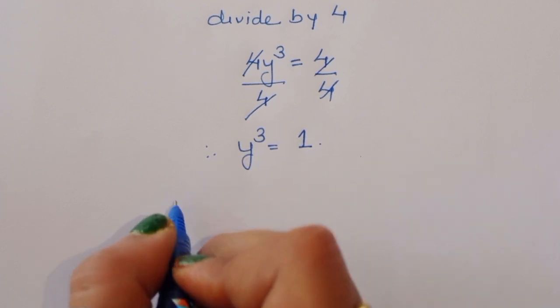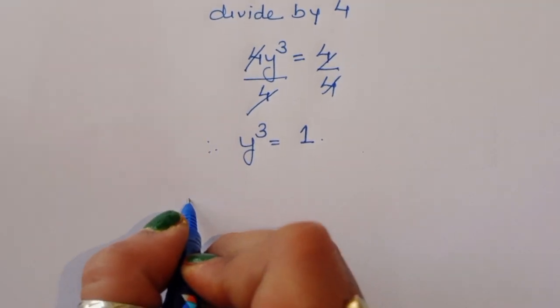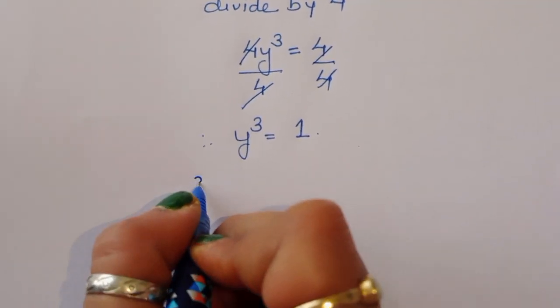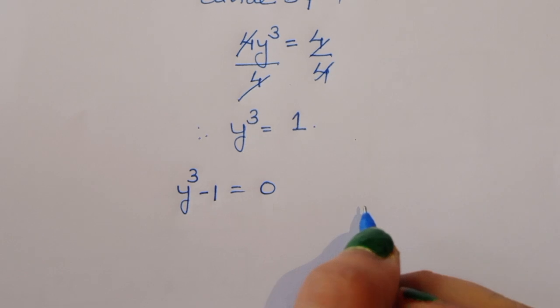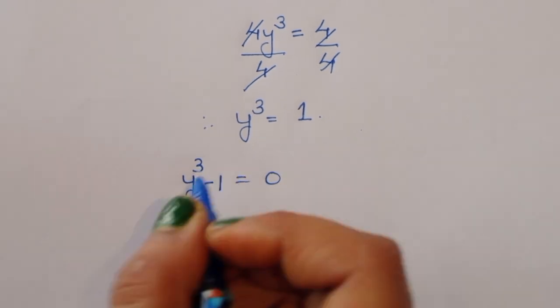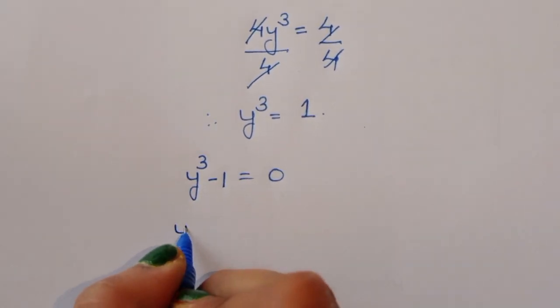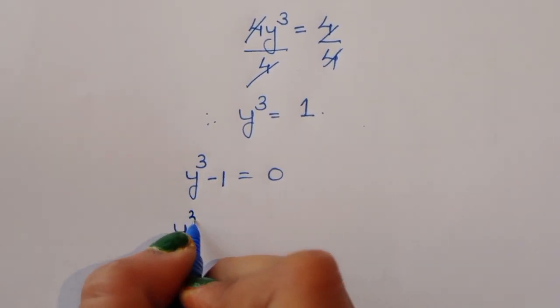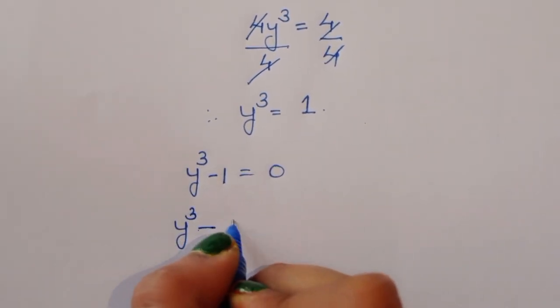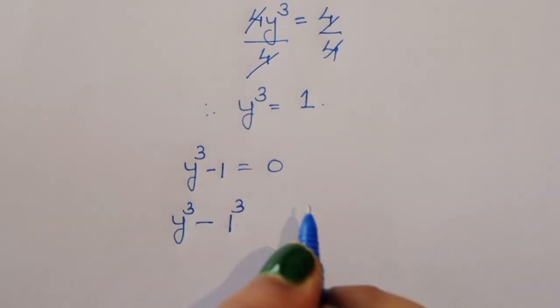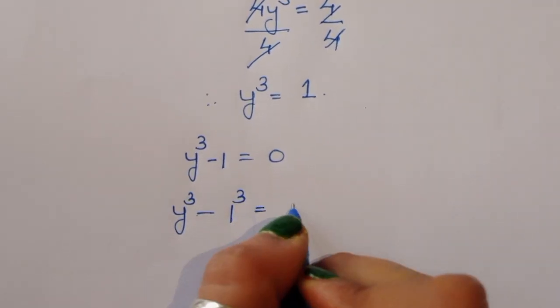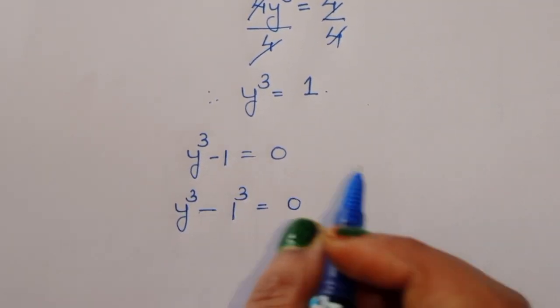Now we can write this as y³ - 1 = 0, which is y³ - 1³ = 0, since 1³ = 1.